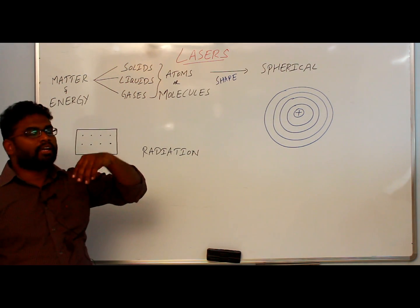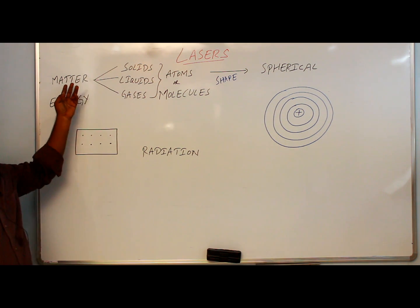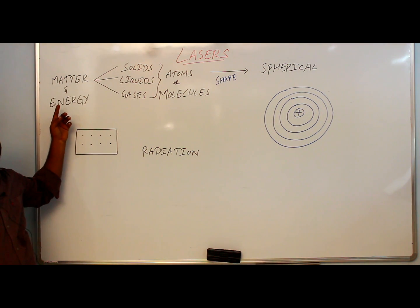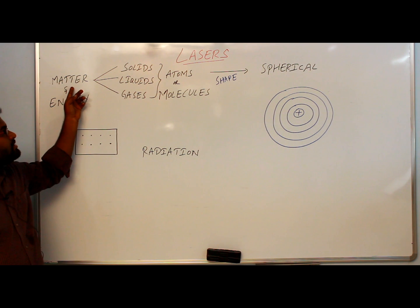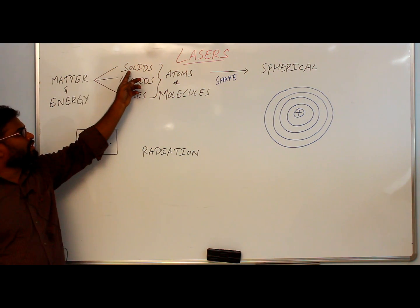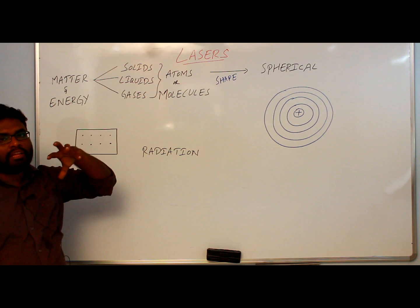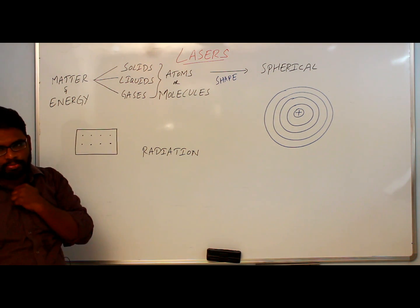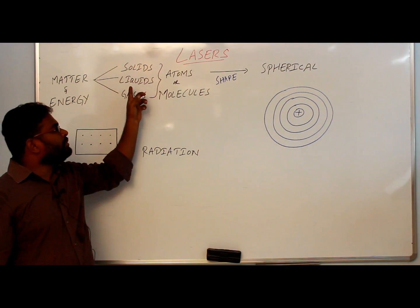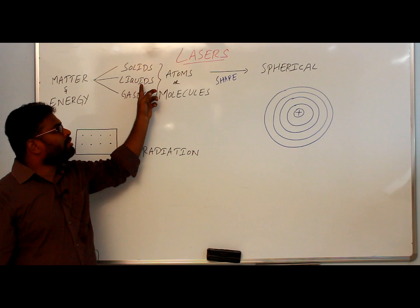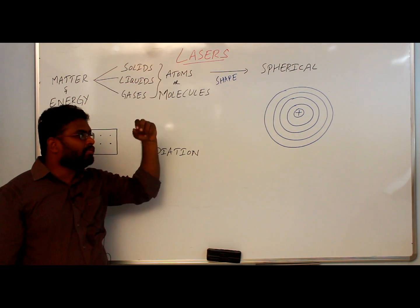Now we are going to see the basics of lasers. The entire universe is made up of two things: matter and energy. Matter is divided into three things — solids, liquids, and gases — based on atomic arrangement. Whatever it is, solids, liquids, and gases are made up of atoms, or groups of atoms, which are called molecules.